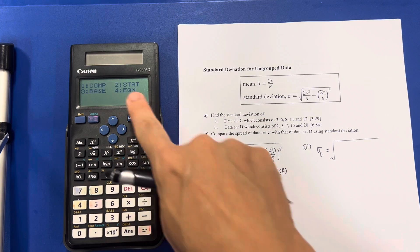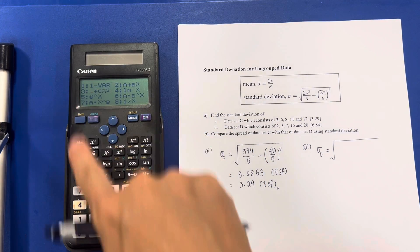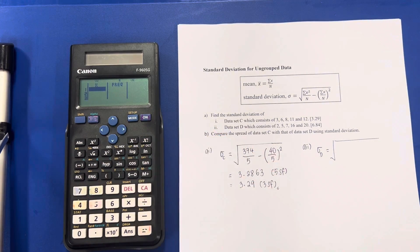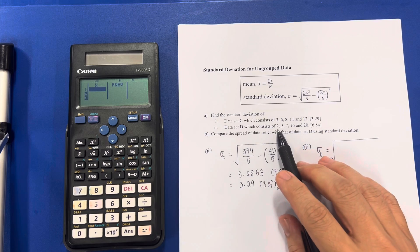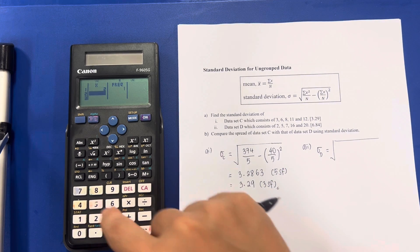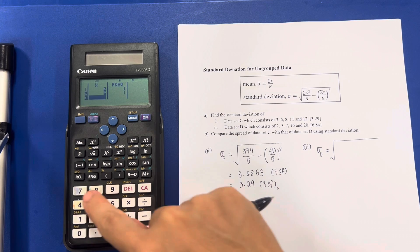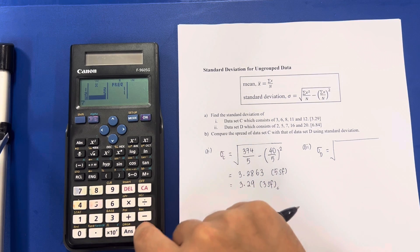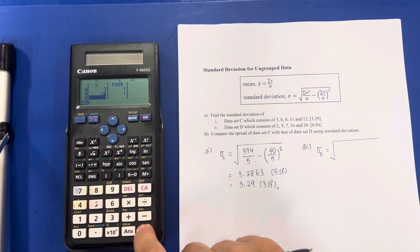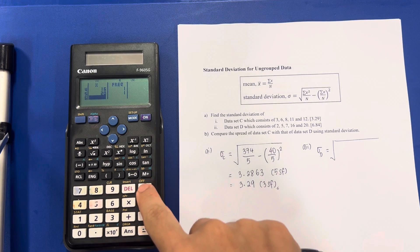Now, I'm going to the mode. Number 2. Number 1. To key in the values. Notice that all the data has been cleared. So, now it's 2, 5, 7, 16, 20. 2, 5 equal. 7, 16 equal. And 20 equal. CA.